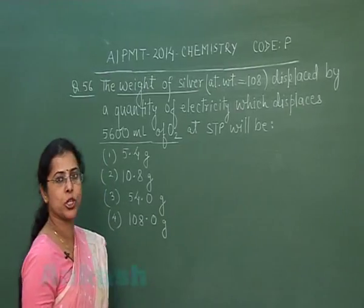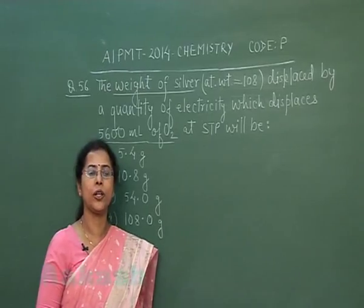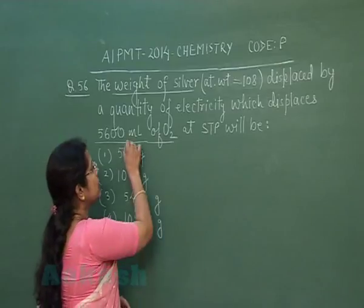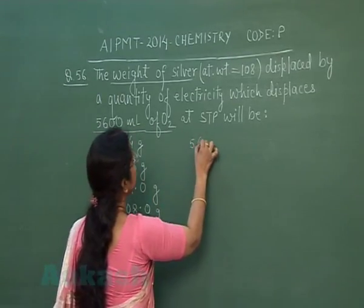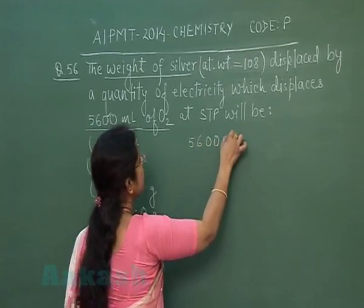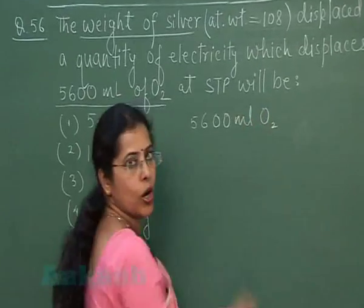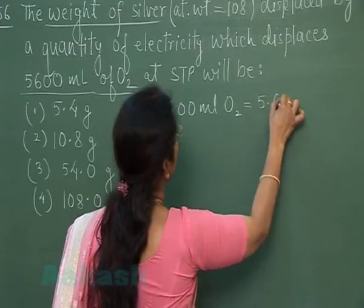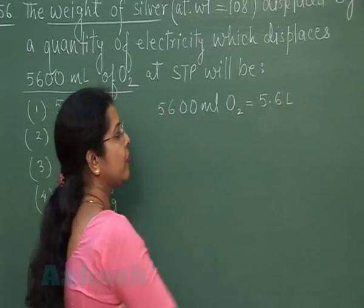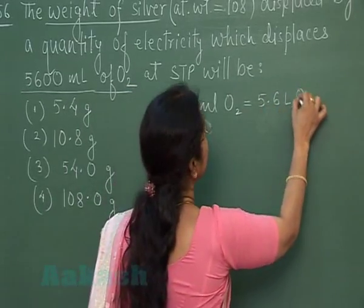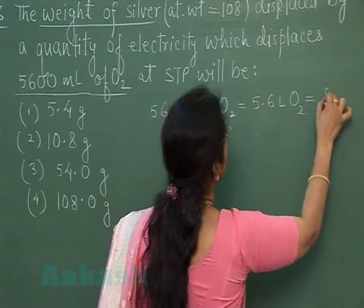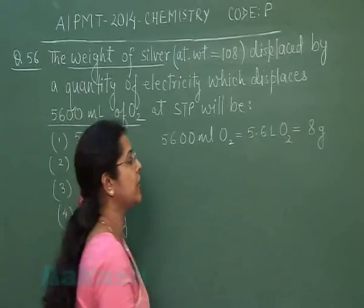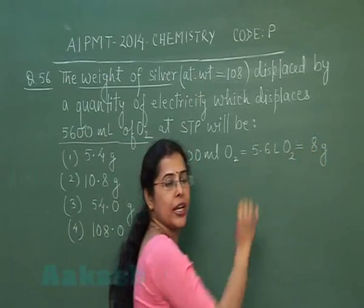In this question, the same quantity of electricity is passed and 5600 milliliters of oxygen gas is evolved. 5600 mL equals 5.6 liters, and 5.6 liters of oxygen gas means 1 gram equivalent of oxygen, with a mass of 8 grams.